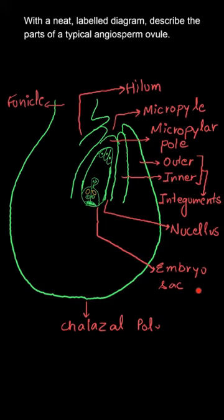The embryo sac is the structure that contains ovum and polar nuclei for fusion and embryo development. Chalazal pole is present completely opposite to the micropyle end.